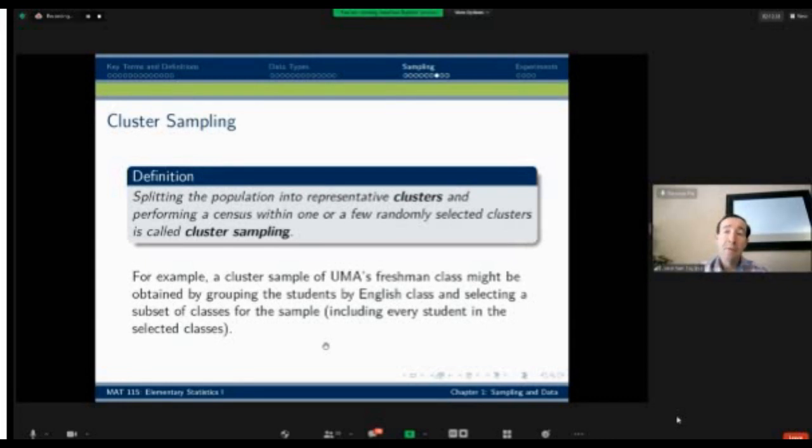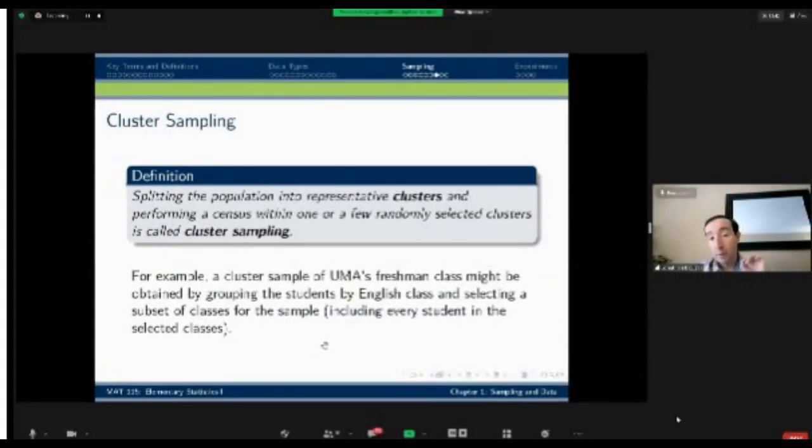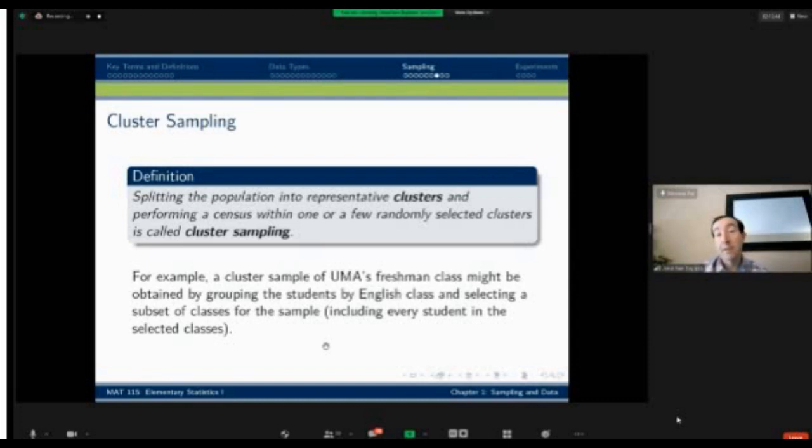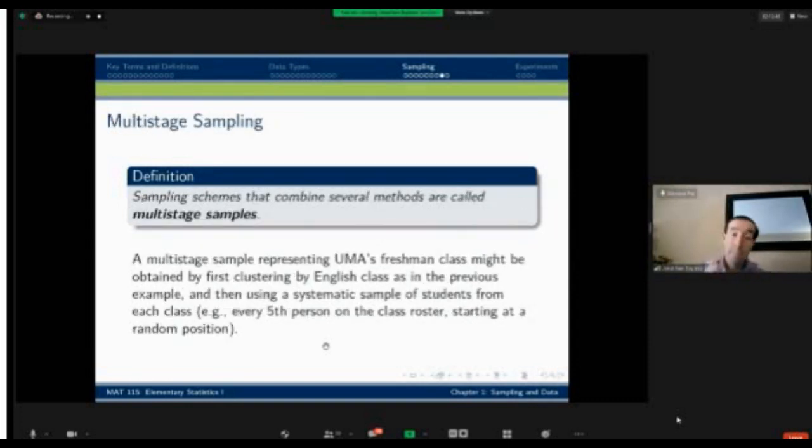The key difference to look for is, out of each group, how many am I taking? Am I taking a few from every group, or am I taking all of a few groups? If I'm taking a few from every group, that is stratified random sample. If I'm taking all from a few groups, that is cluster sample.